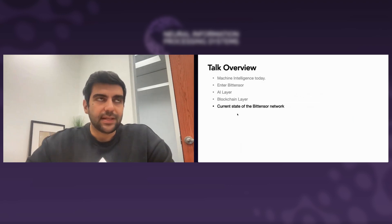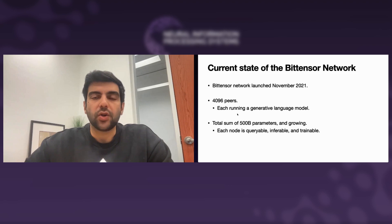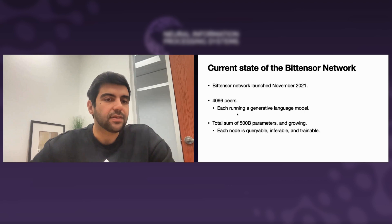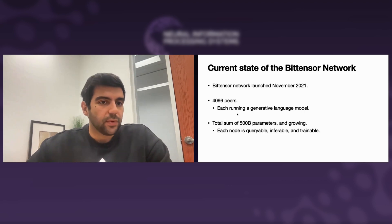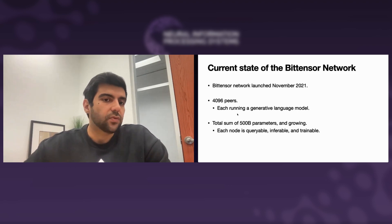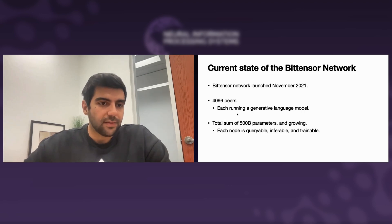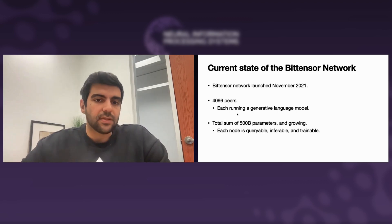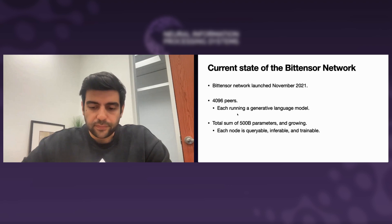The current state of the BitTensor network: we launched in November 2021 and have capped participating peers at 4096. This cap is dynamic — if someone joins with a high-performing model they want to contribute, the lowest-performing peer is automatically kicked out and replaced. Each peer is typically running a generative language model plugged into the Hugging Face API. The conservative estimate is a total sum of about 500 billion parameters, decentralized and growing. Each node is queryable, inferrable, and trainable, and all this information is accessible on the website or GitHub.